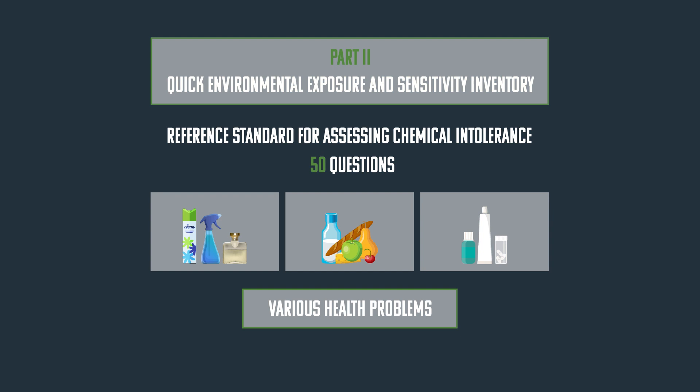The QEASY has five sections designed to assess various chemical exposures, how they affect your health, and the impact that these exposures and symptoms may have on the quality of your life. The response options for items on the QEASY range from 0, not at all a problem, to 5, moderate symptoms, to 10, disabling symptoms.